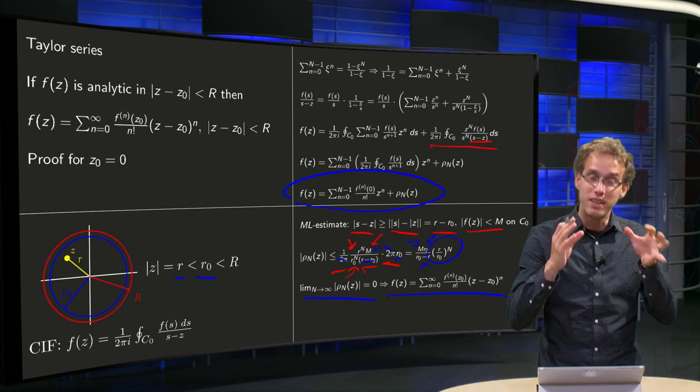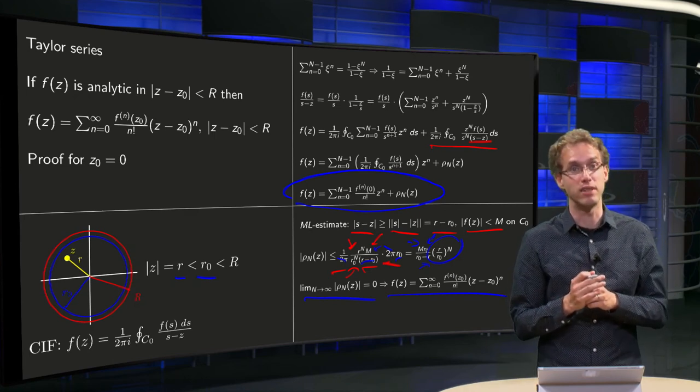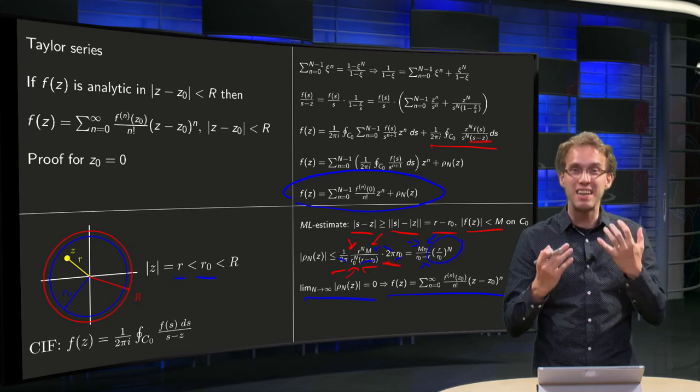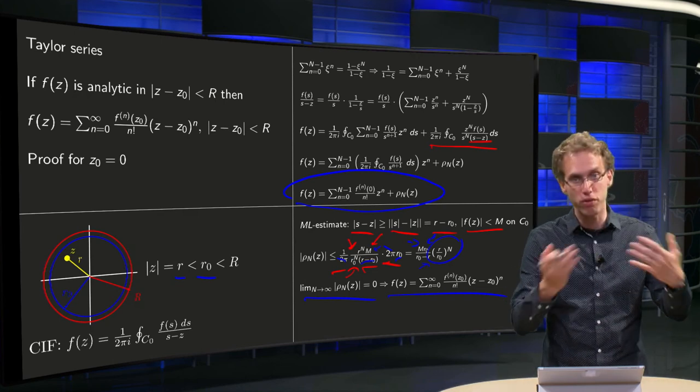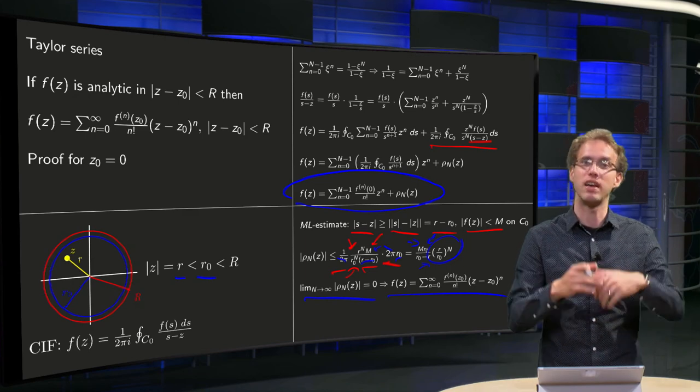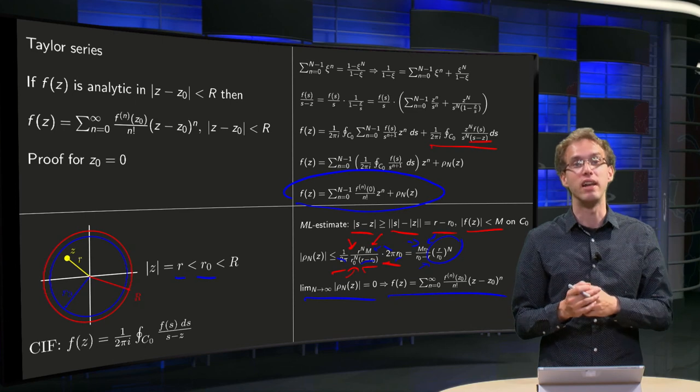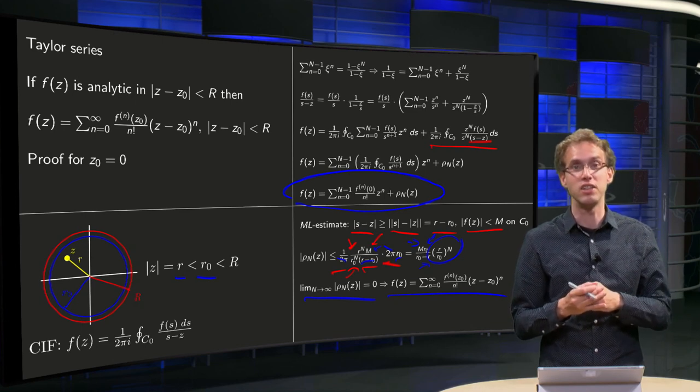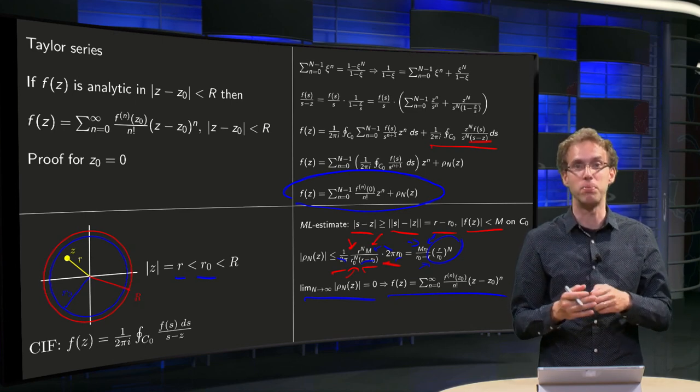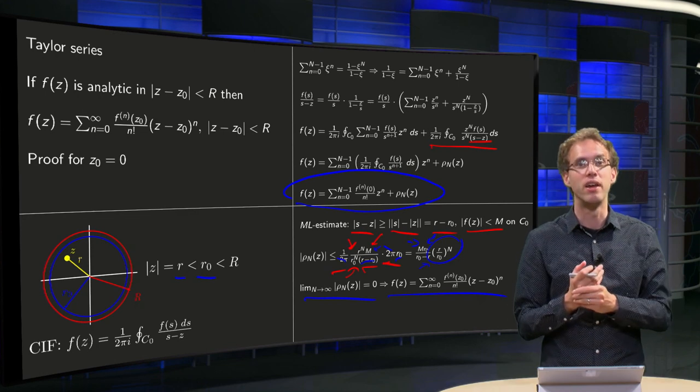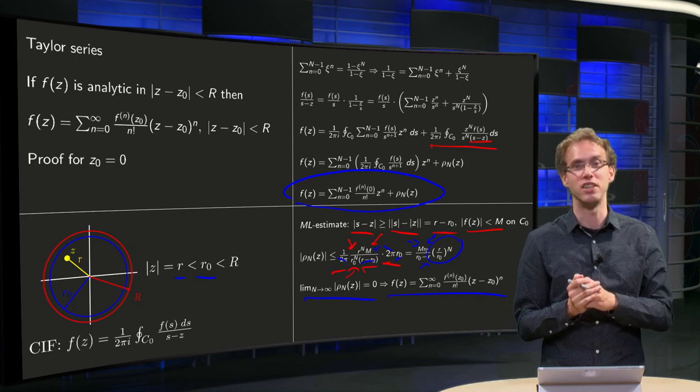And that's exactly the expression for the Taylor series. So given the fact that f of z is analytic, we are heavily relying on that. We are using Cauchy's integral formula all the time. So given that f is analytic, we can use Cauchy's integral formula, and then we can show that f of z has a Taylor series expansion. So you now know that every analytic function has a Taylor series.